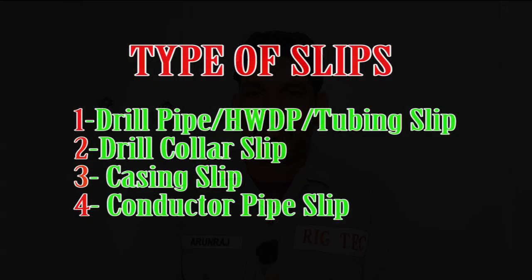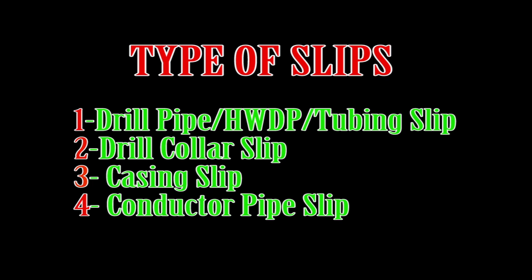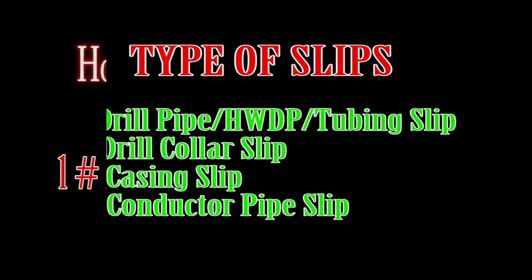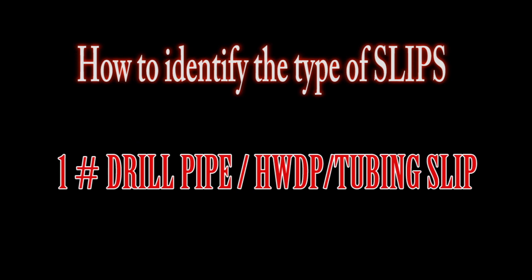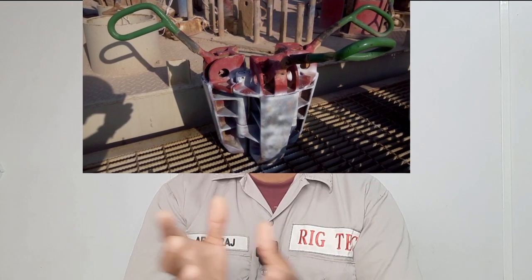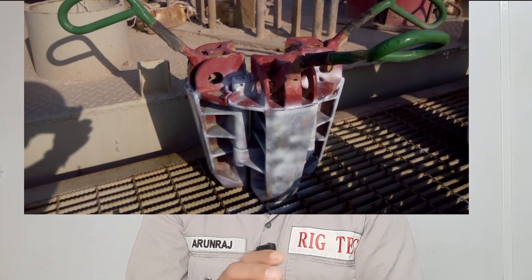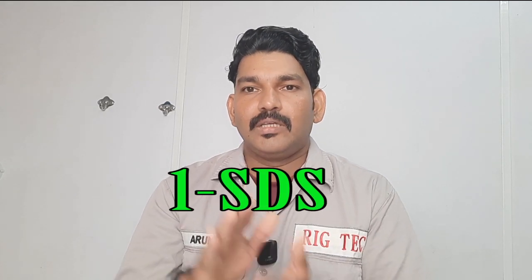Drill pipe and tubing slips come with three segments, so you can easily identify them. If you're getting a slip in the field and it has three segments, you can easily identify that it is used for drill pipe and tubing. The drill pipe slips can be divided into four types: SDS — the contacting area size, also called the button area size, is 11 inches.